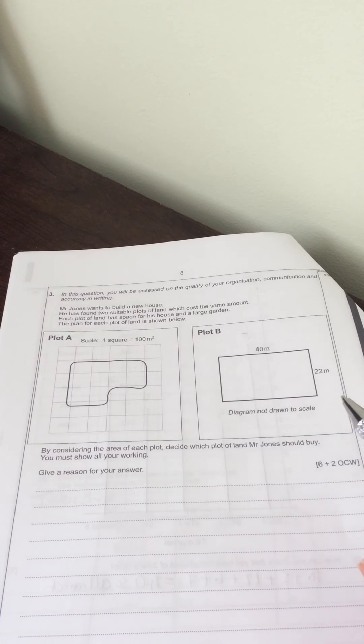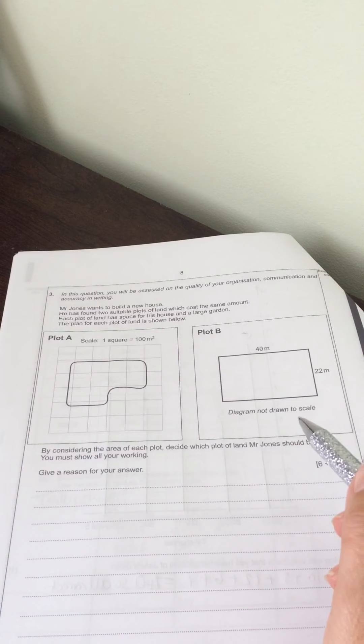It says, by considering the area of each plot of land, decide which plot Mr. Jones should buy and show all your workings out and give a reason for your answer. So what we're looking for is a plot of land that is good value for money which means we need to work out the area of each plot of land.